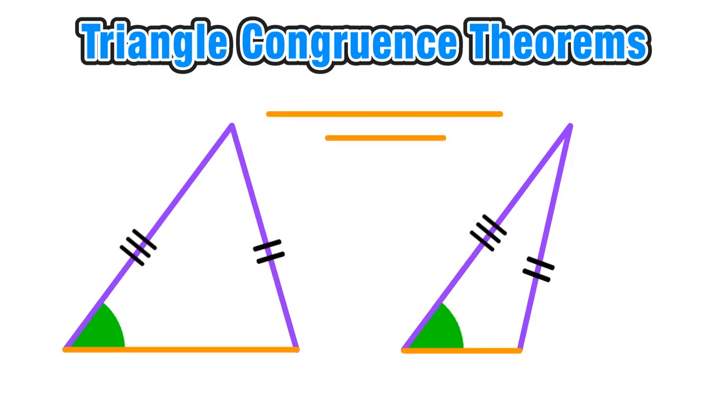So due to this ambiguity, angle side side or side side angle is not enough to prove that two triangles are congruent.